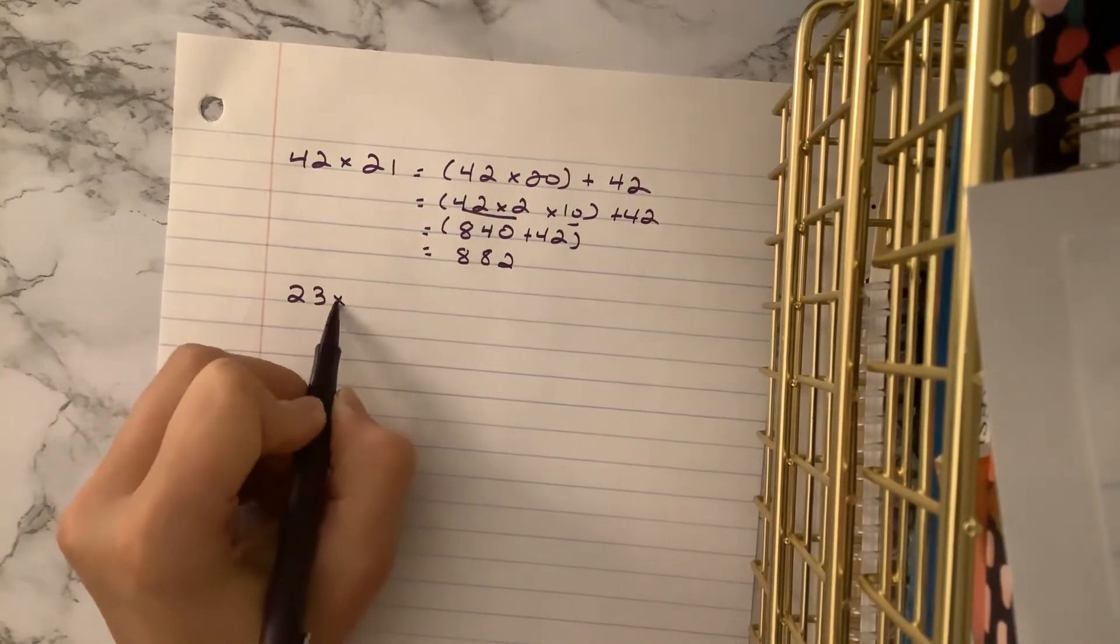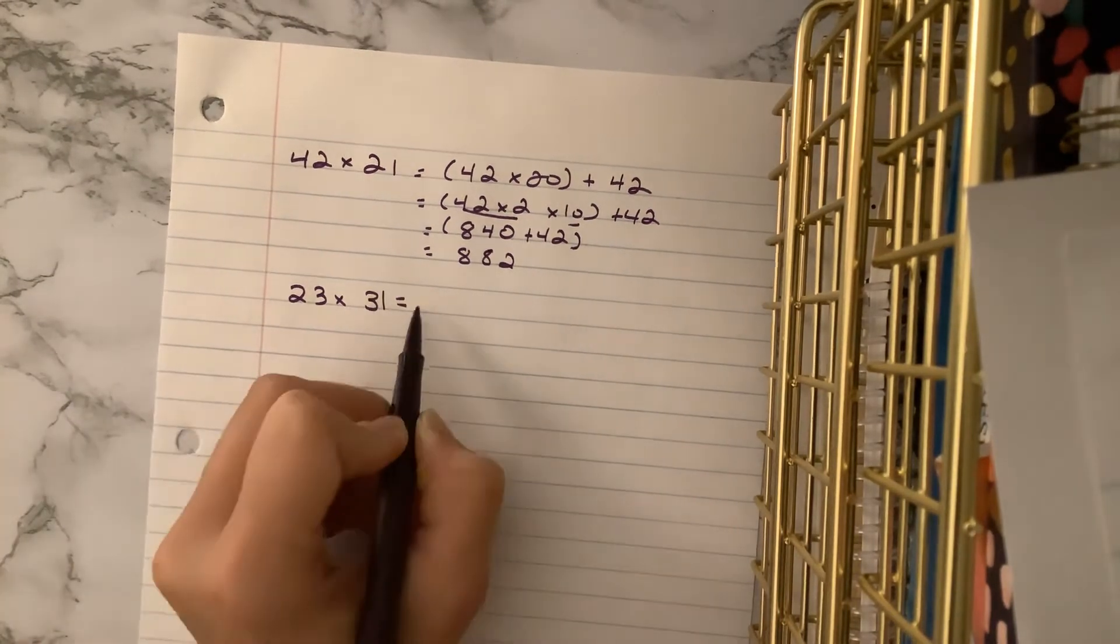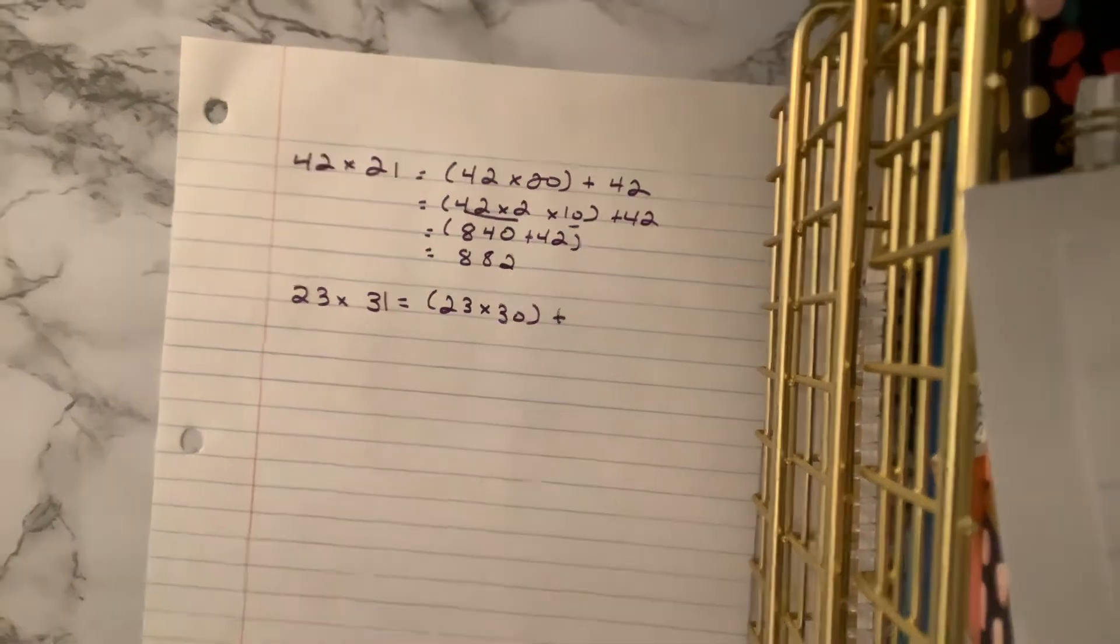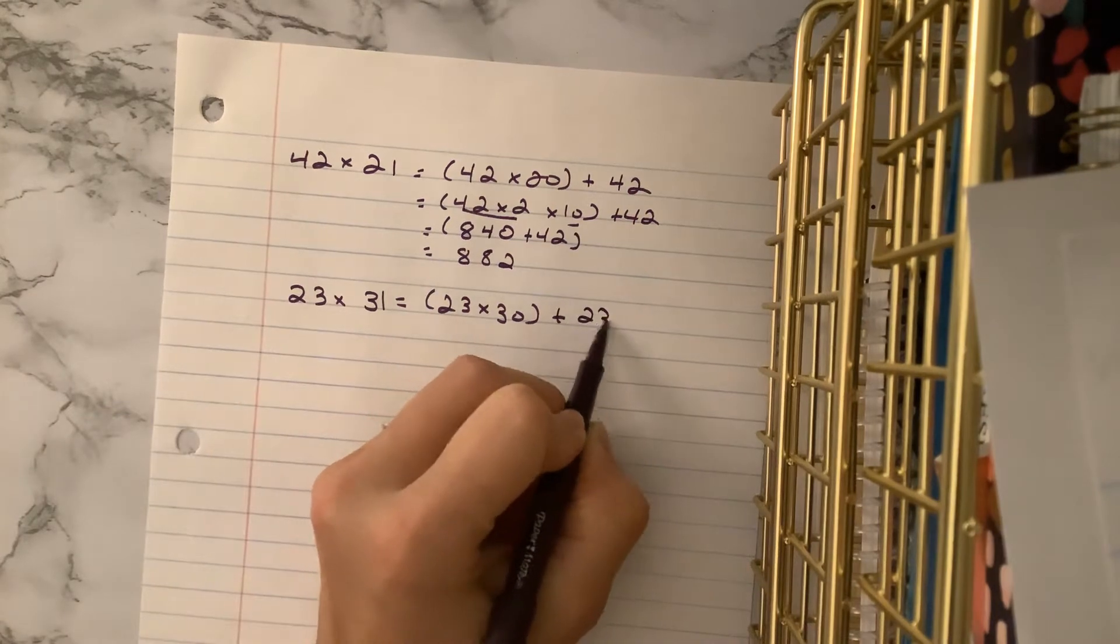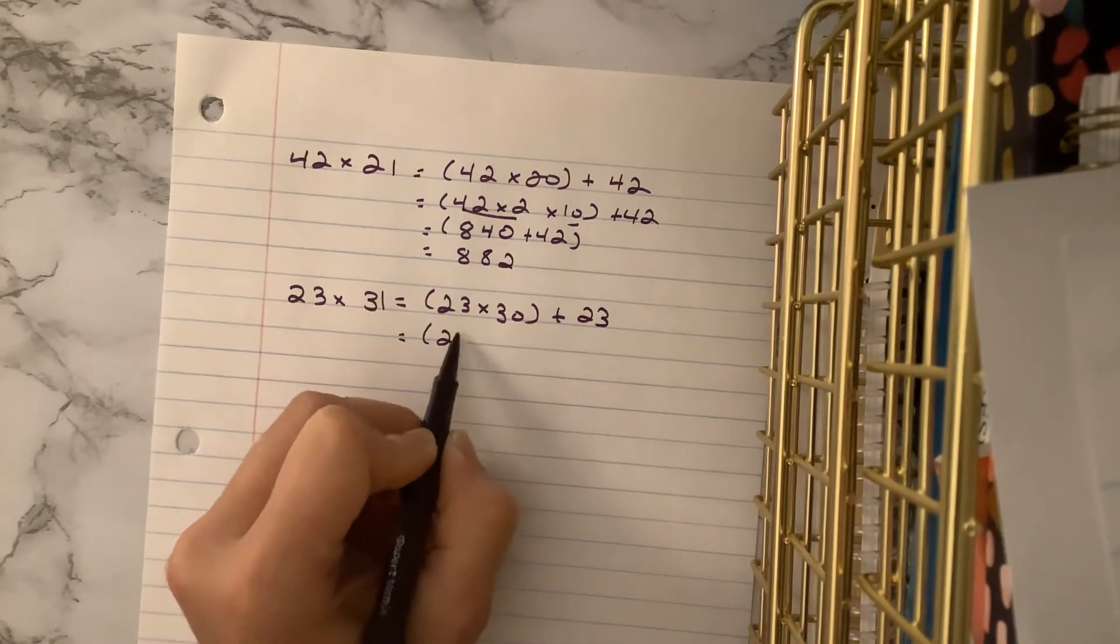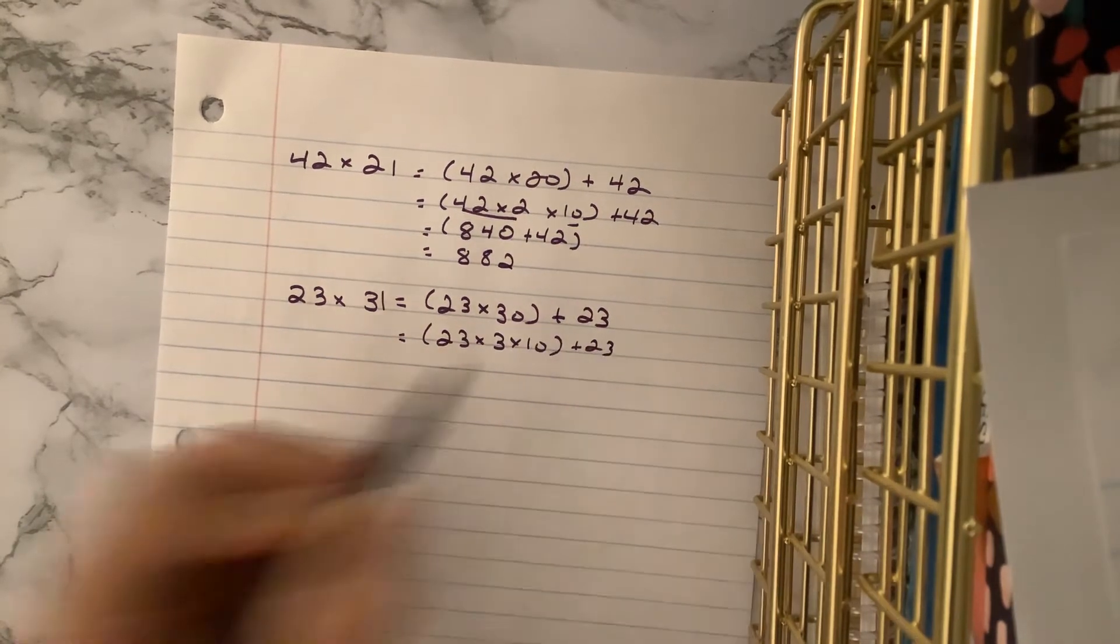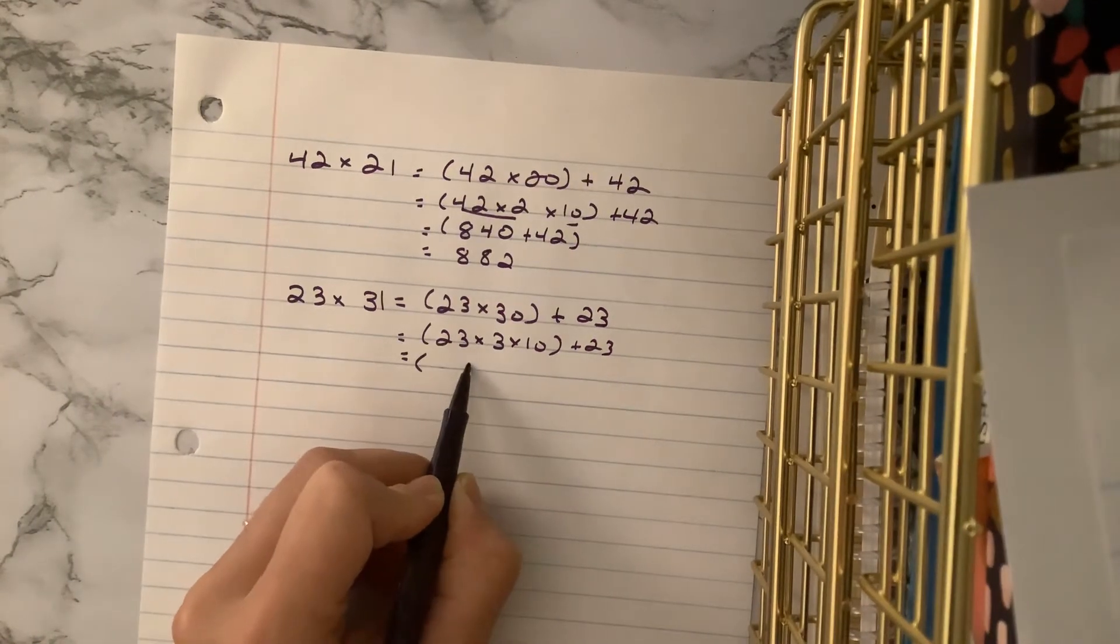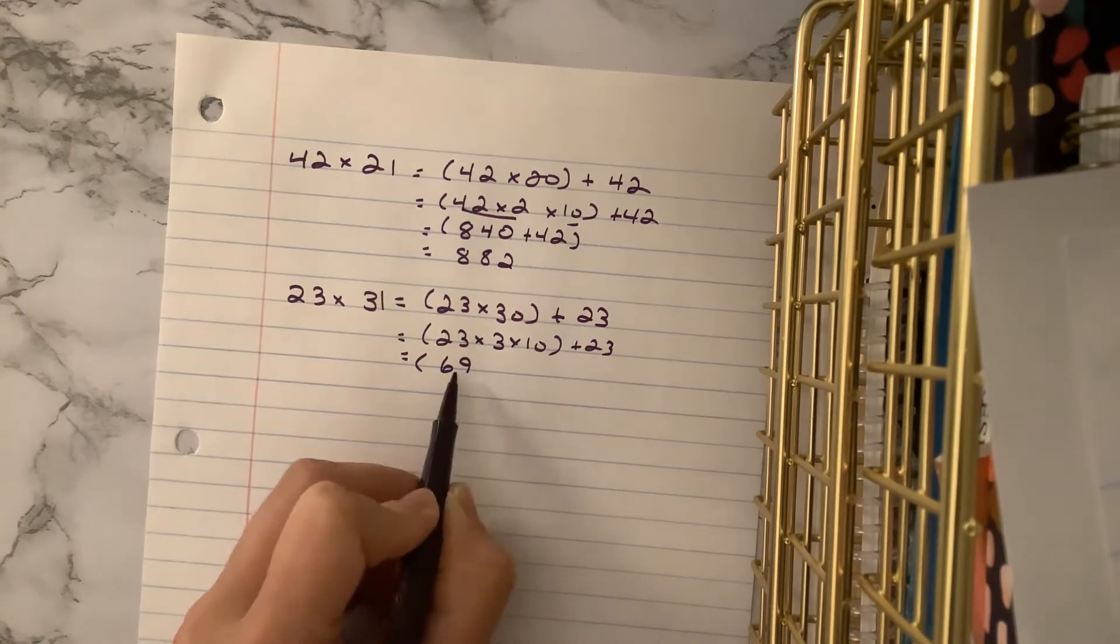Let's try 23 times 31. So remember, we're going to do 23 times 30, and then save 1 for last. And by save 1, I mean save 1, 23. So we're adding on that 23 at the end. Okay? Now remember, we're breaking this into its parts, saving 10 for last. Thinking in our heads, 3 times 3 is 9. 3 times 2 is 6. So we get 69.